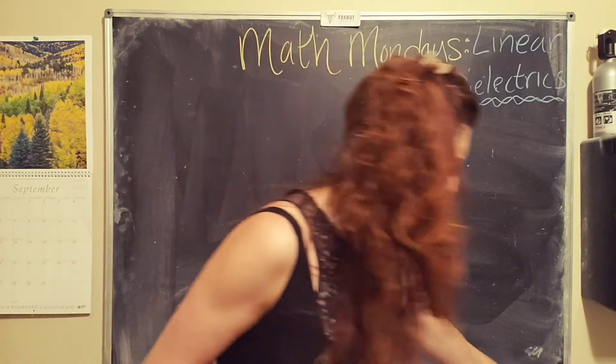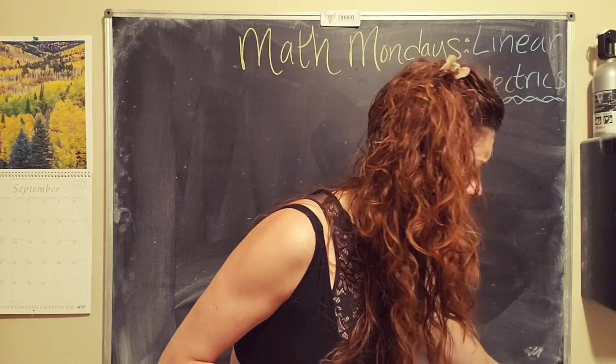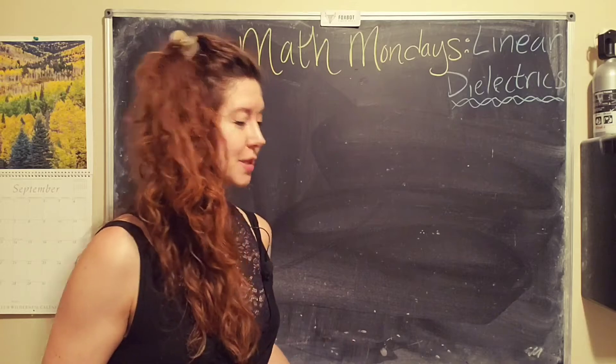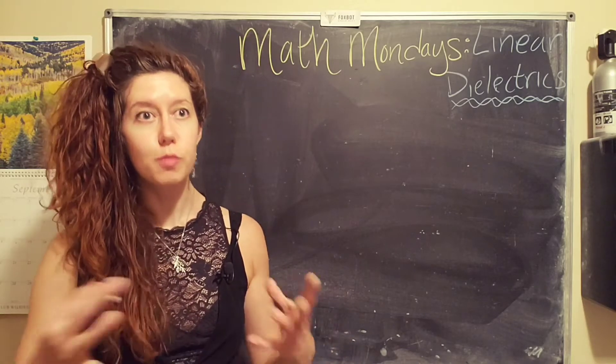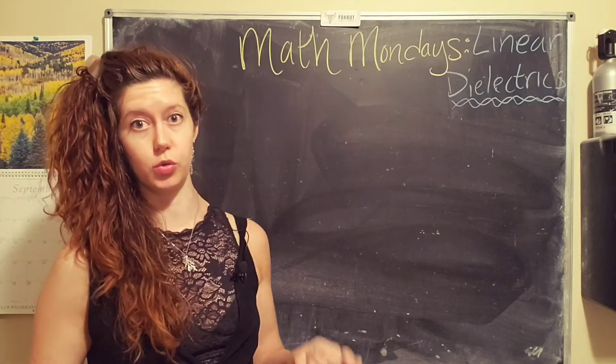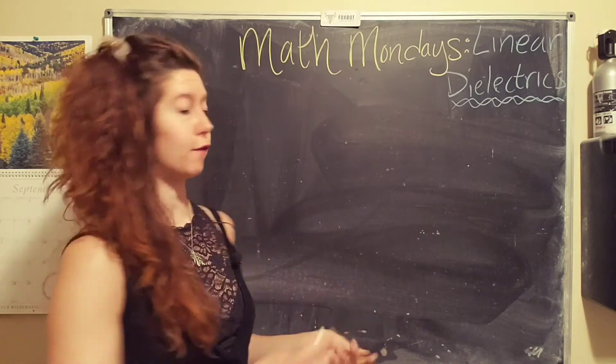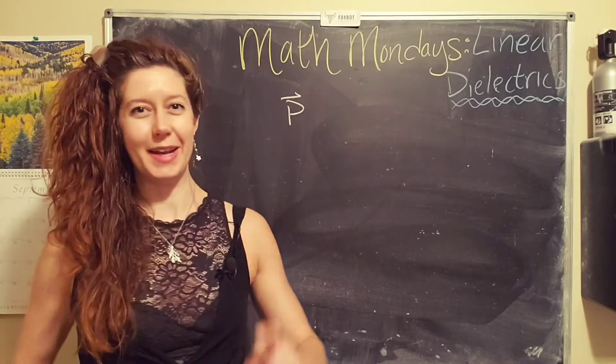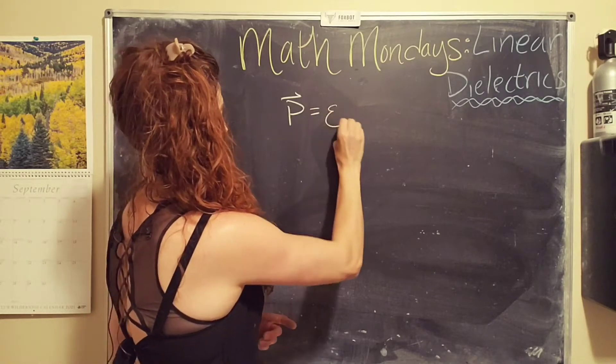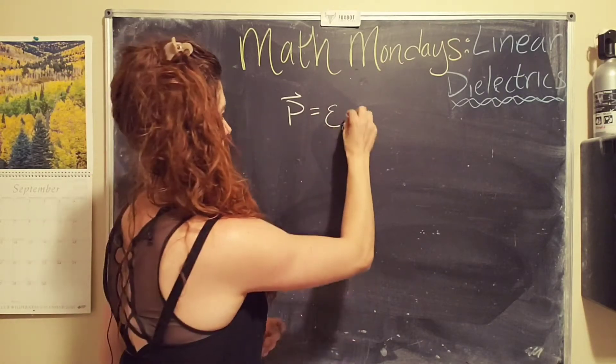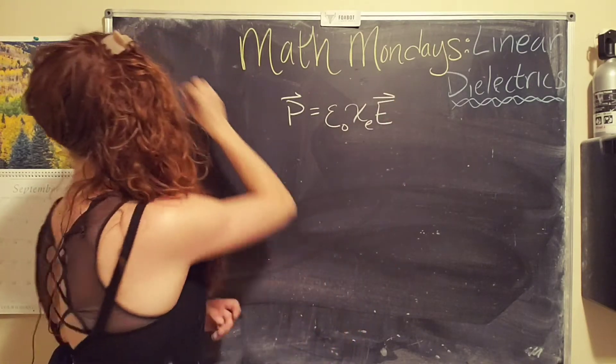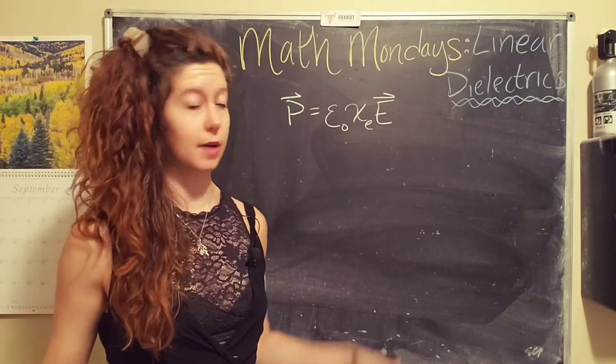And so for a lot of materials, it took me a really long time to get a piece of chalk. For a lot of materials, the resulting movement of bound charges, which we're calling polarization, is directly proportional to the applied electric field. Or in other words, in math words, the polarization P is equal to the vacuum permittivity times this new constant times the electric field.